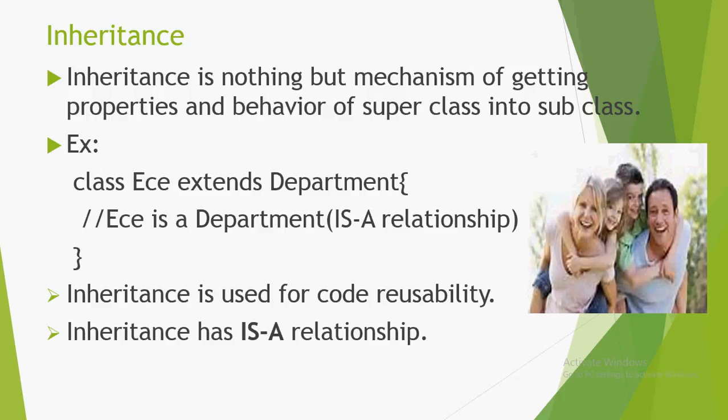Inheritance is nothing but a mechanism of getting properties and behavior of a superclass into a subclass. To give a real-time example: in a parent-to-child relationship, whatever properties or genes come from the parents — that is called inheritance. Programmatically, class Child extends Department; here the child class inherits from the parent class.